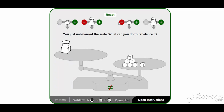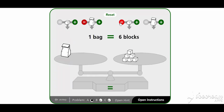Let us remove the third and see what happens — the scale is once again unbalanced. So I'm going to have to remove a block from that side too. Now that I only have the bug on the left, on the right I have one, two, three, four, five, six blocks. I can tell because this scale is balanced that this bag is equal to six kilograms, since each block equals one kilogram.